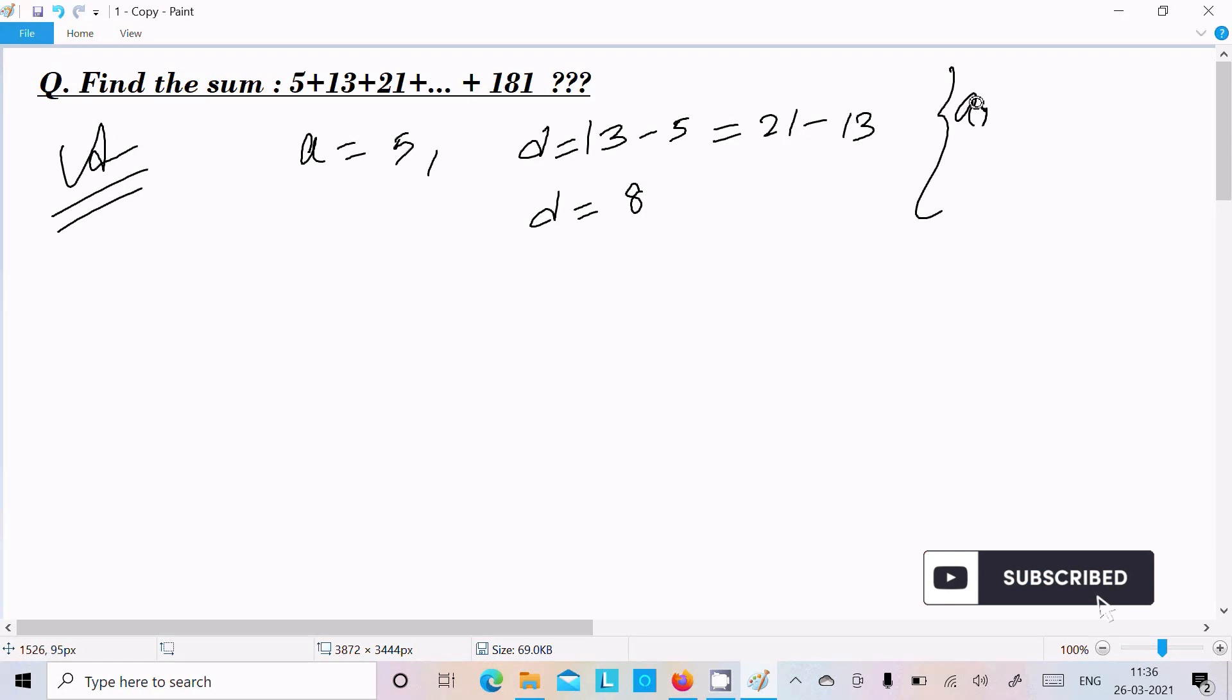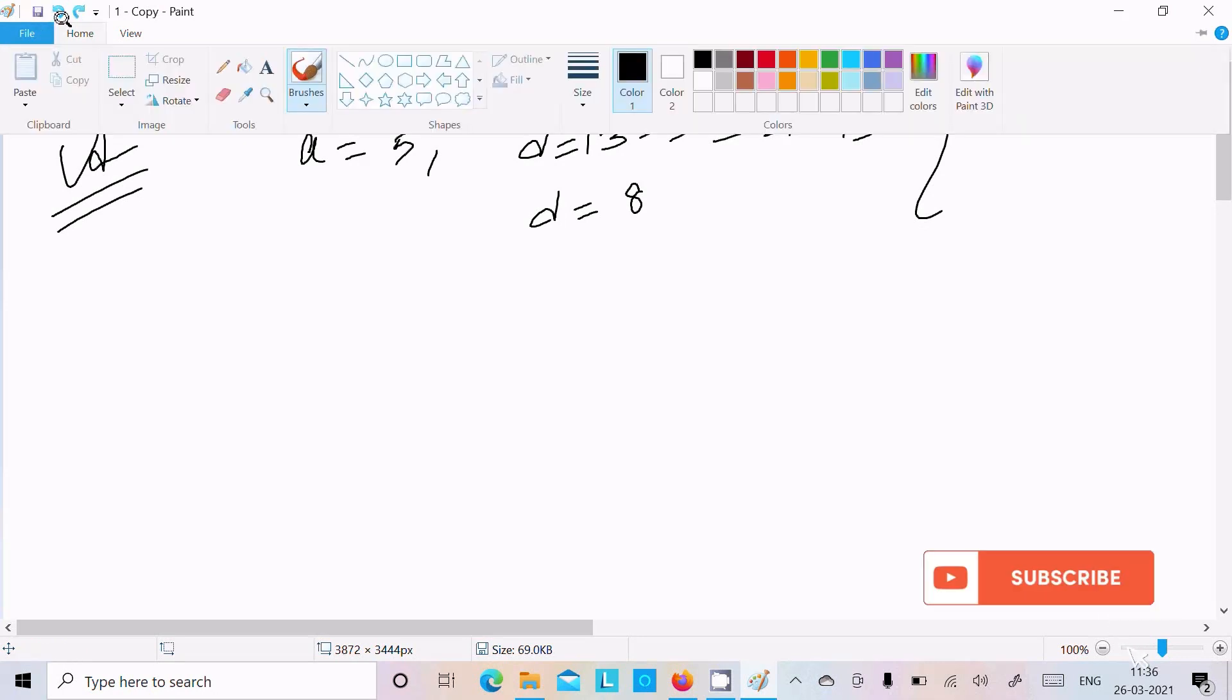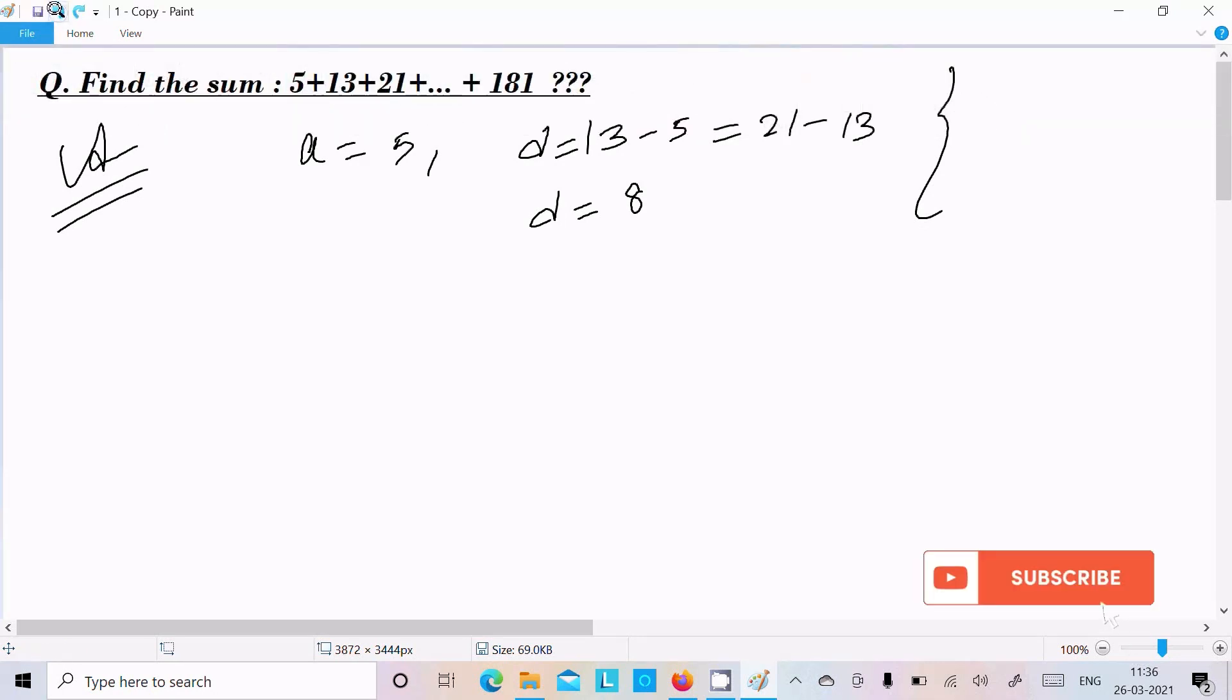So this is the common difference. The common difference formula I am now going to write: d equals a_n minus a_(n-1), so n should be 2, 3, 4. So if you give 2, so a2 position and a1, n minus 1, that is 2 minus 1, a1. So 2nd position is 13, 13 minus 5 that comes 8. So d value is now 8.